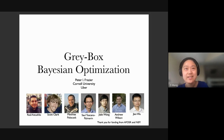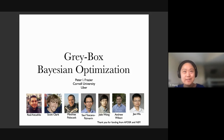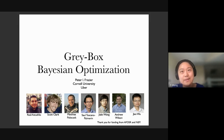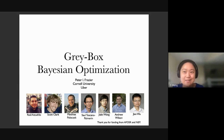Welcome everyone. Today we have a wonderful opportunity to have Peter Frazier joining us. Peter is a professor at Cornell University and also a staff data scientist at Uber. I always thought of Peter as a world expert in Bayesian optimization, but I recently realized that he also led a COVID-19 mathematical modeling team to design Cornell's testing strategy so they could get students back early.